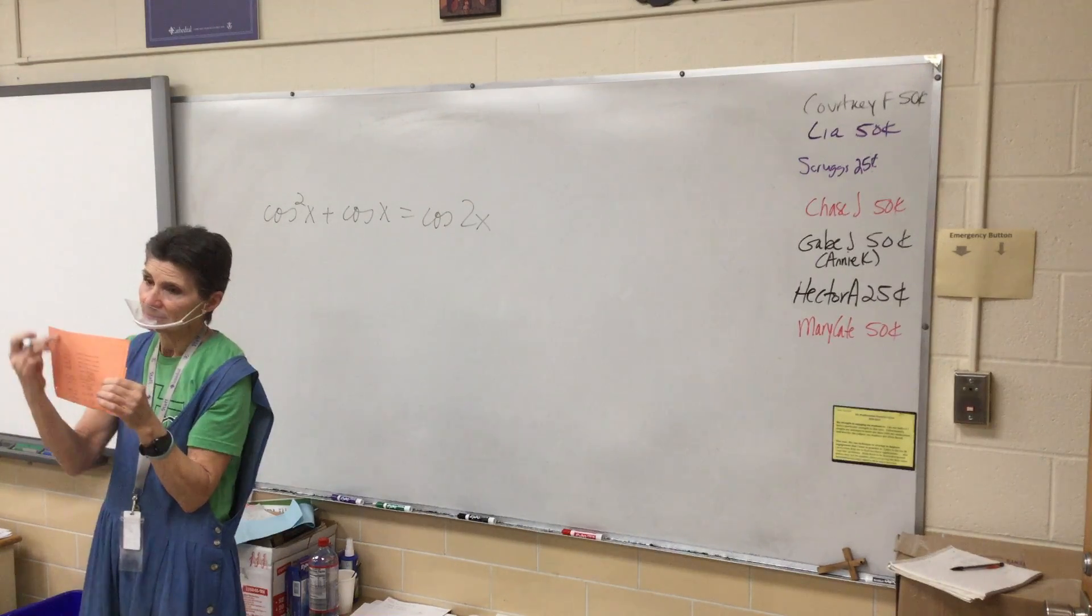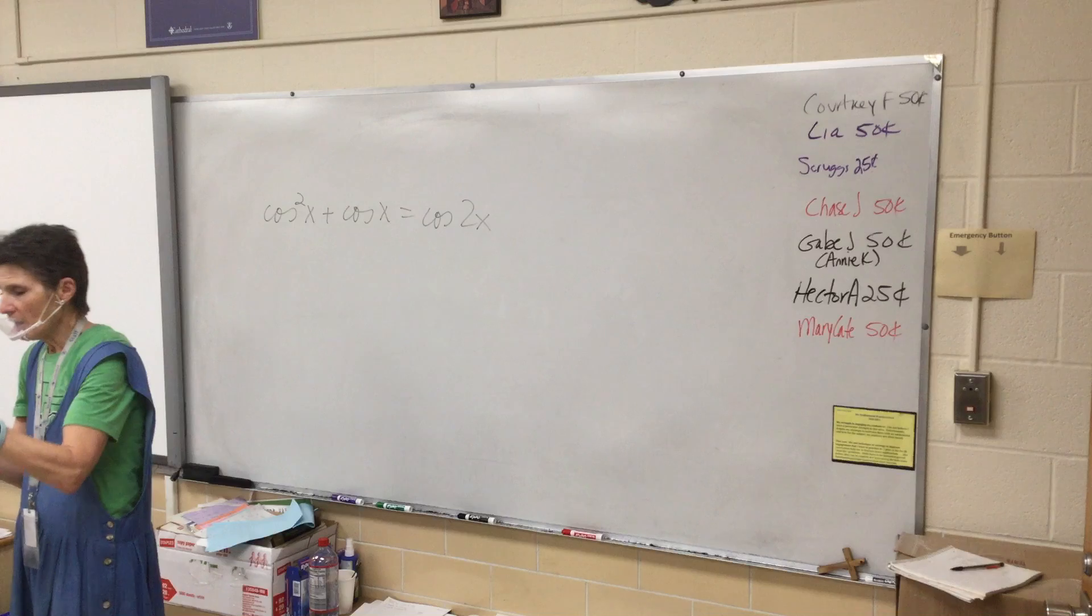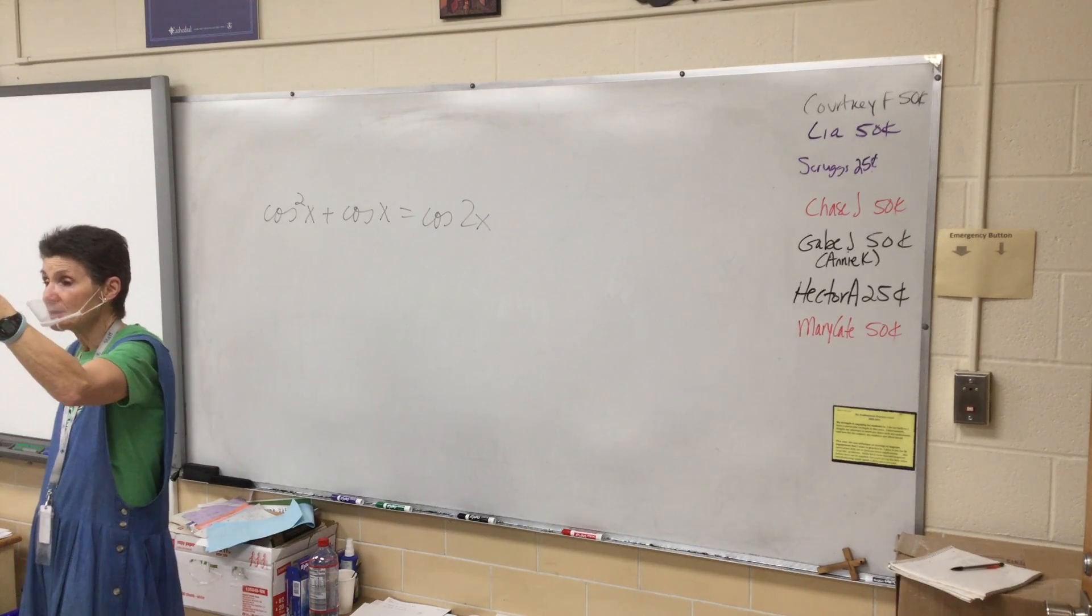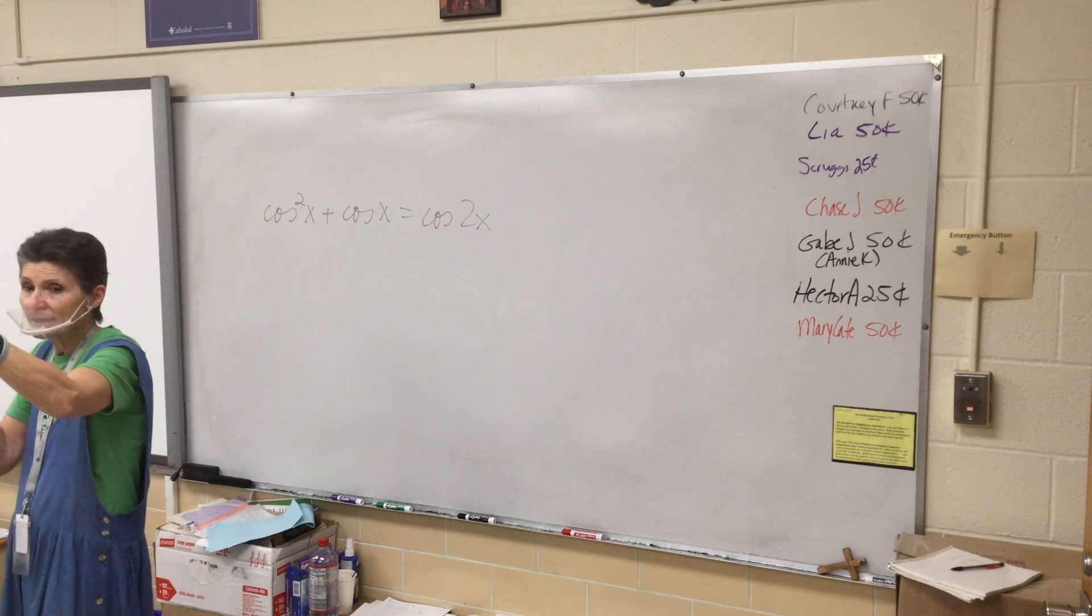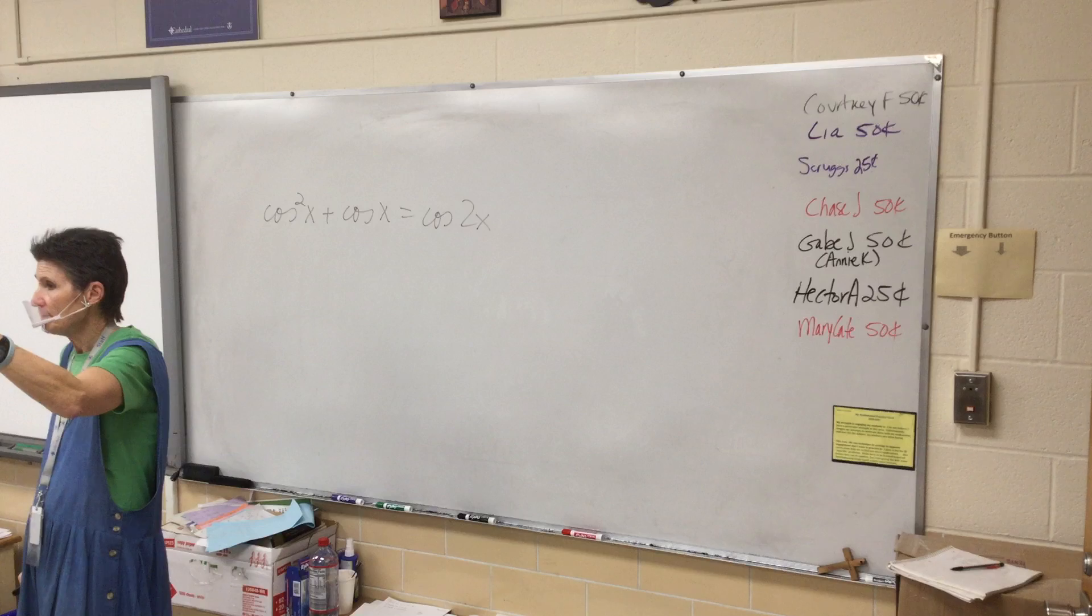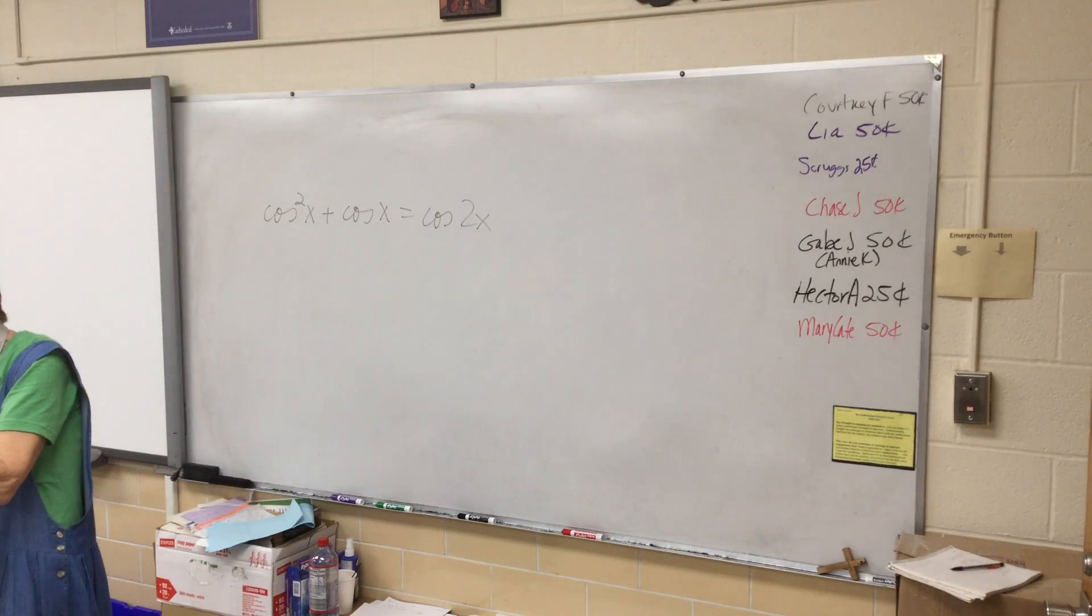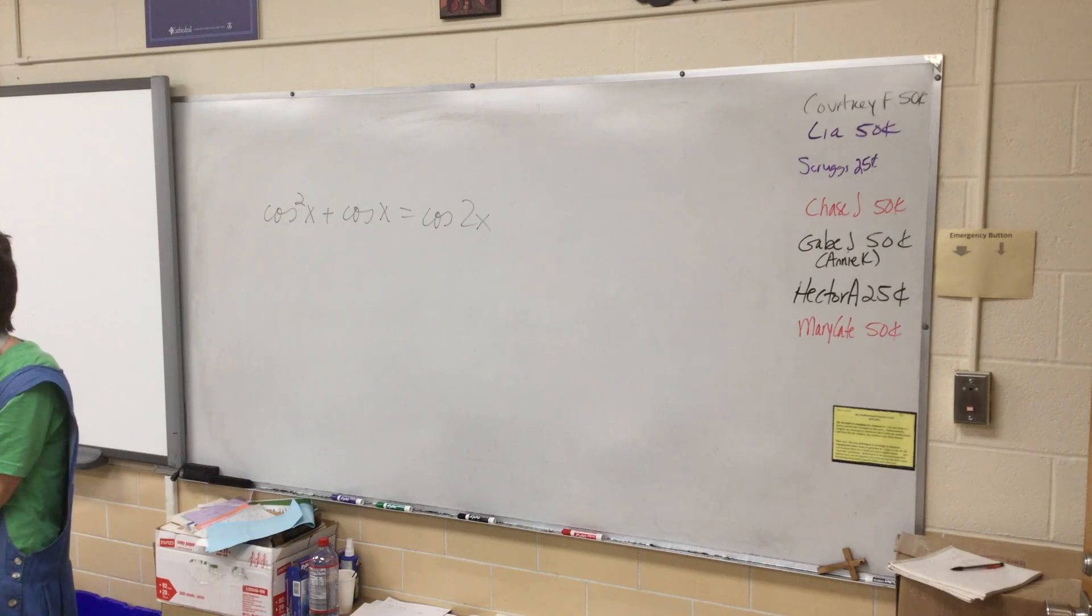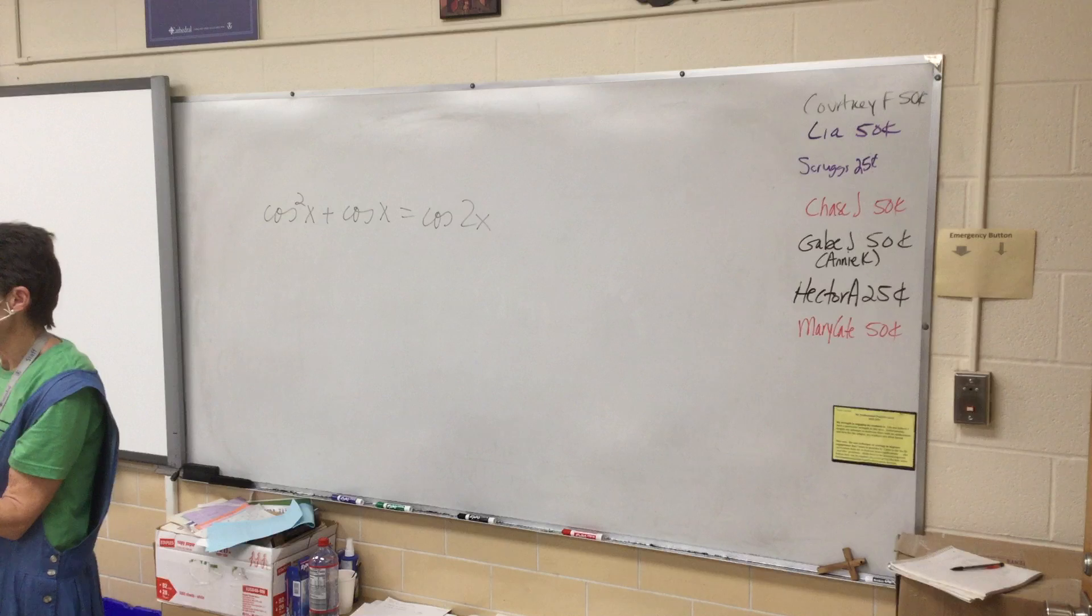You already have memorized the first eight in the first column. The other ones you need to memorize are the double angle identities. So sine 2 theta, cosine 2 theta, tangent 2 theta have to be memorized. You may cross off the ones with the negatives underneath the eight that you've already memorized. You don't even need to put those on your note card.